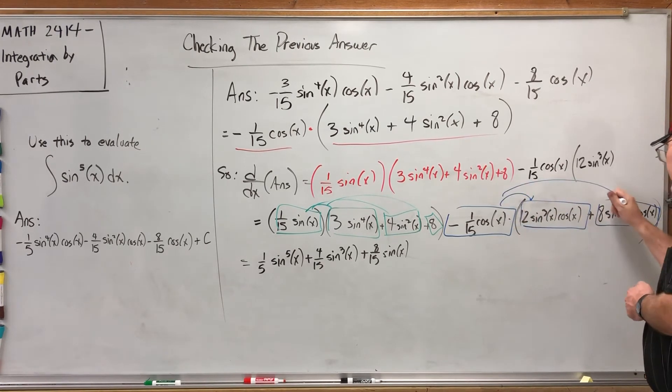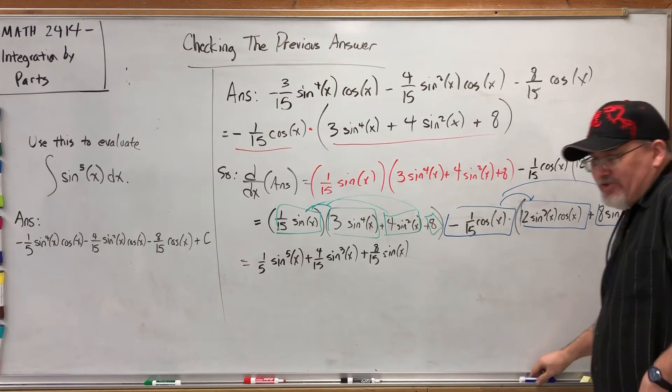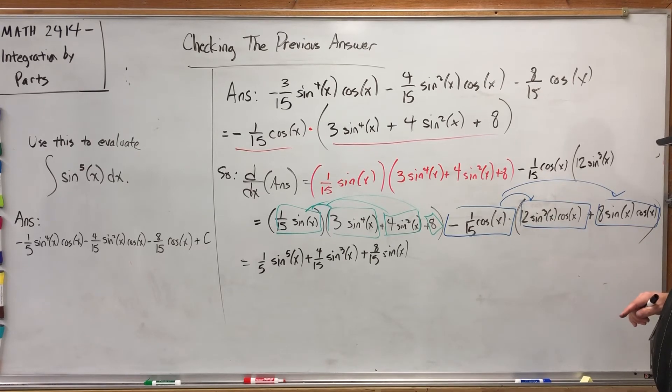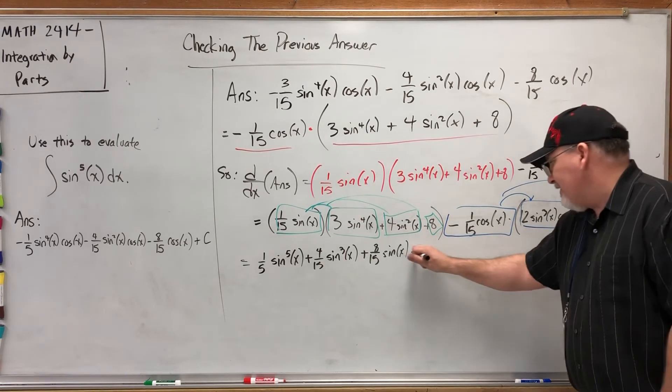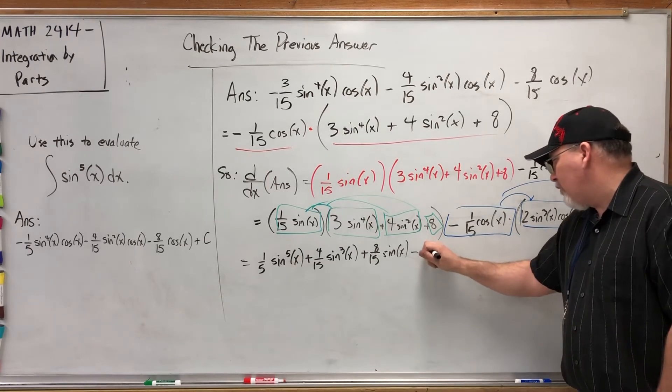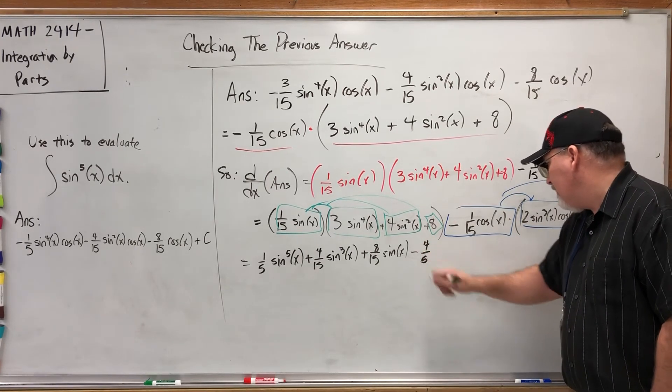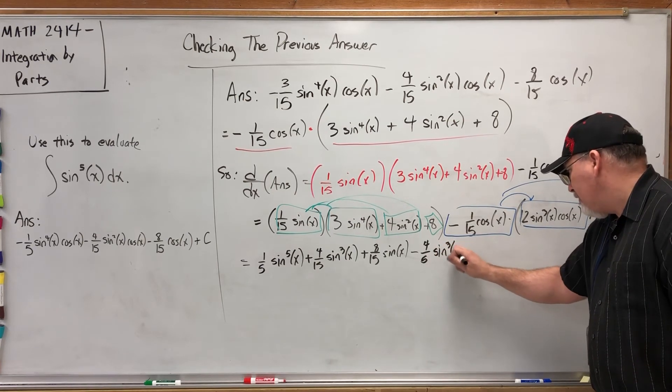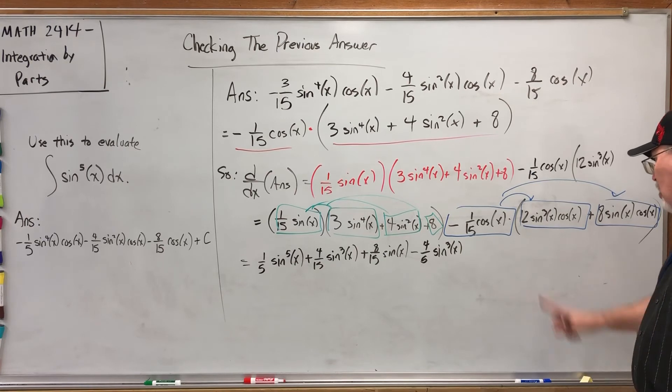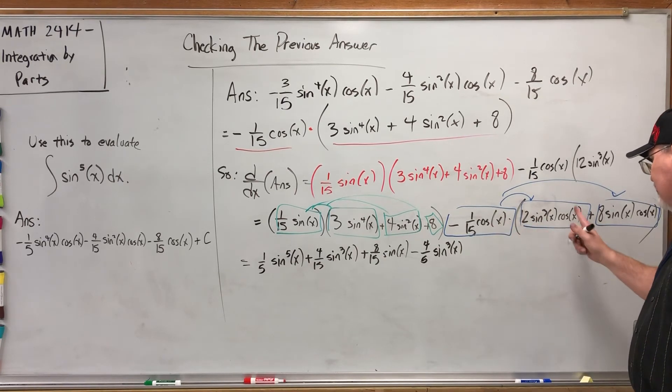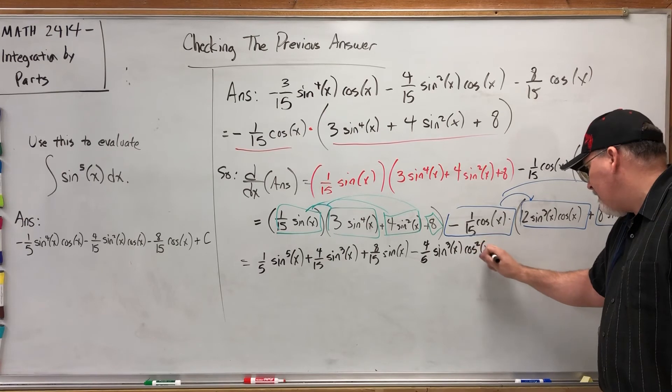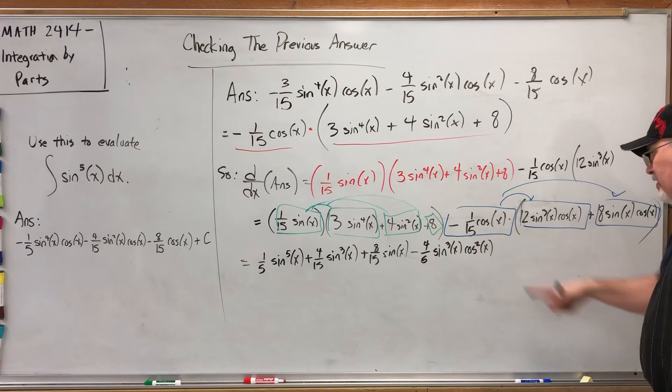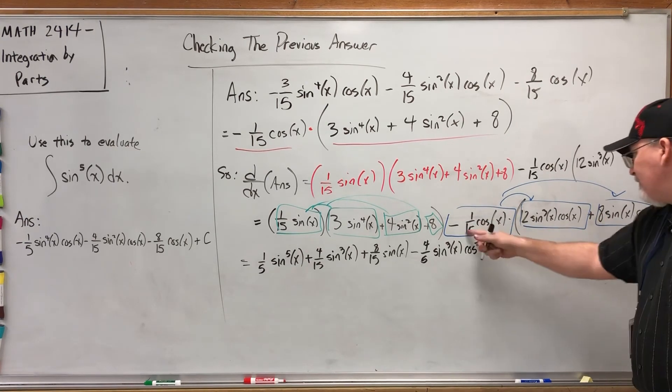All right, so negative one-fifteenth cosine X times twelve sine cubed cosine X first off is going to be negative. Secondly, twelve over fifteen reduces to four-fifths, and then we get sine cubed of X times cosine of X times cosine of X is cosine squared of X. Okay, that's not looking very helpful.